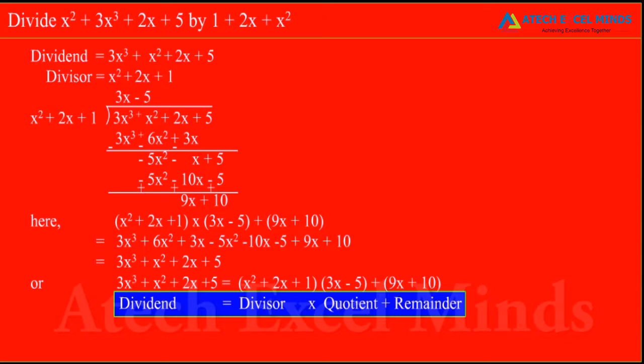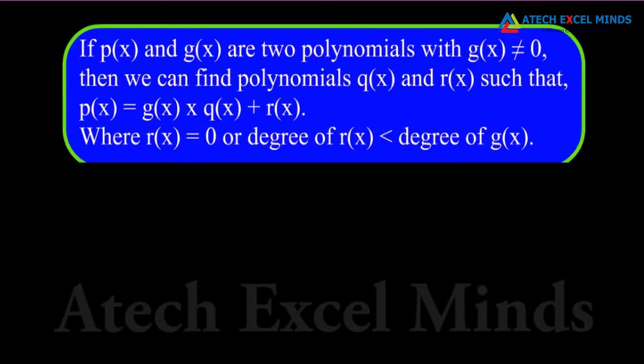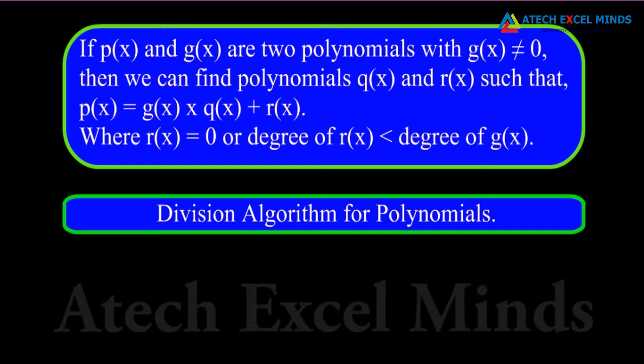This method of division is called division algorithm method. If p of x and g of x are two polynomials with g of x not equal to 0, we can find polynomials q of x and r of x such that p of x is equal to g of x into q of x plus r of x, where r of x is equal to 0 or degree of r of x is less than degree of g of x. This result is known as division algorithm for polynomials.